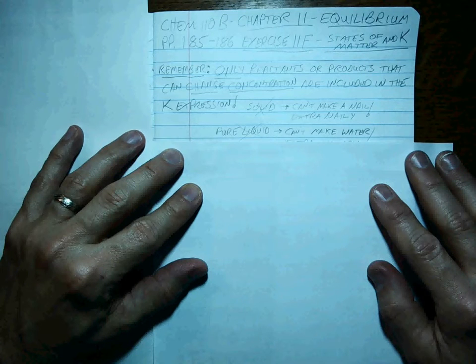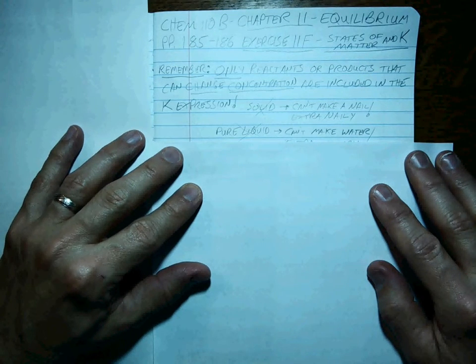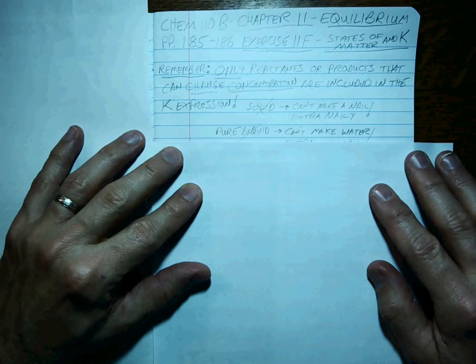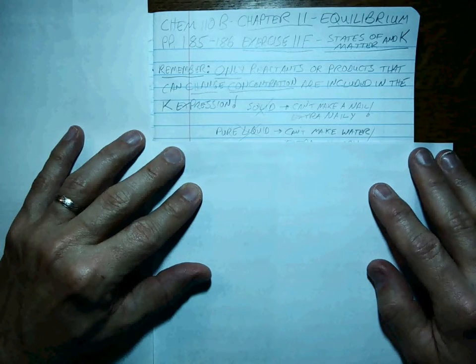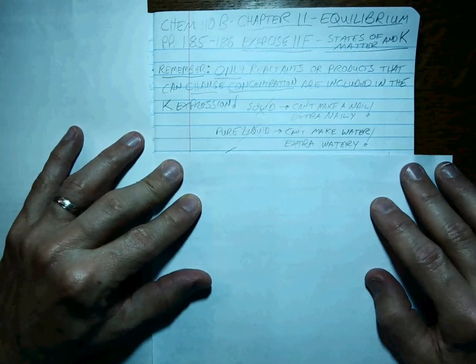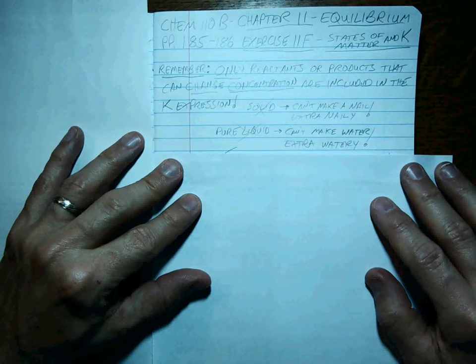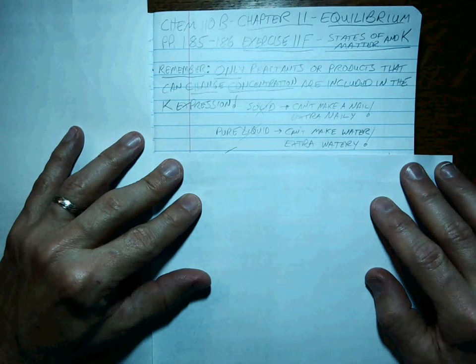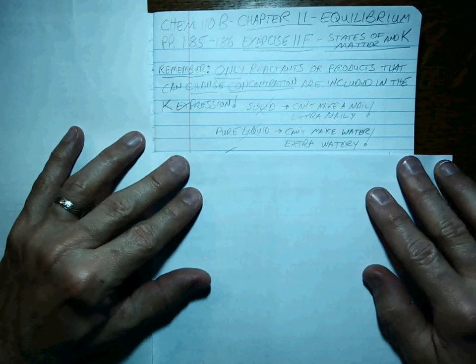You can't change the concentration of a pure liquid. If you're really thirsty and you fill up a glass of water, you can't squeeze the water down and then add more water to make it extra thick, extra watery water. That's crazy, right? So a pure liquid like water, H2O liquid, can't change its concentration, so it's not part of the K expression.